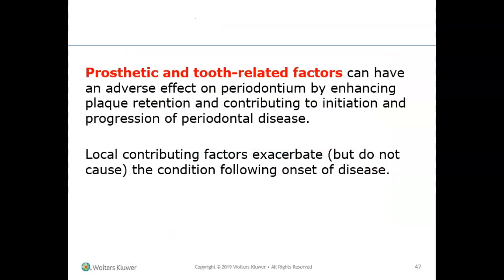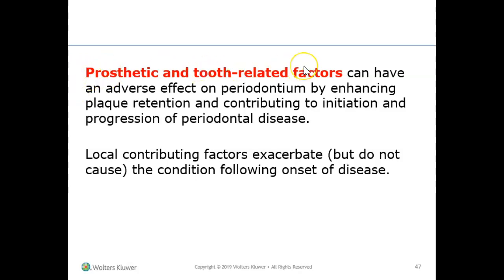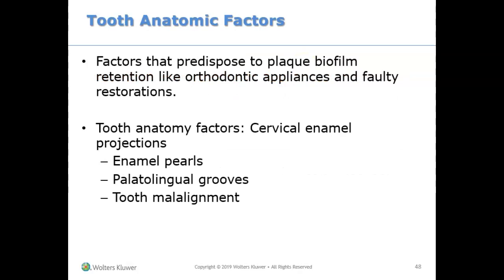Another condition found under other conditions affecting the periodontium is prosthetic and tooth-related factors. This means if you look at the tooth or a prosthetic — such as a denture, bridge, or implant — anything inputted into the mouth, and you see something that is not right, such as something causing more plaque retention or worsening periodontal disease, you would check off that the client has prosthetic or tooth-related factors.